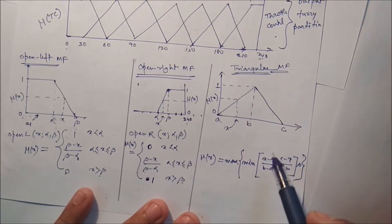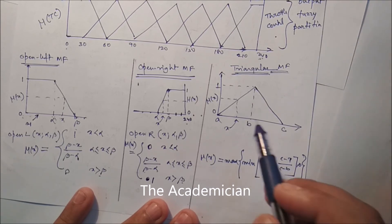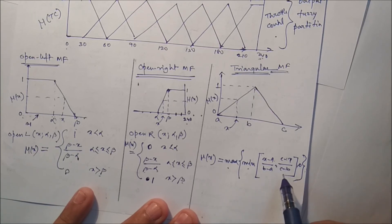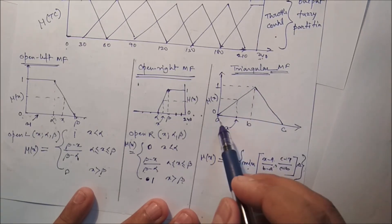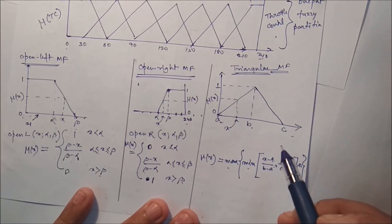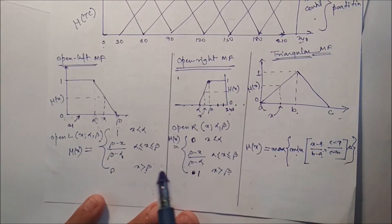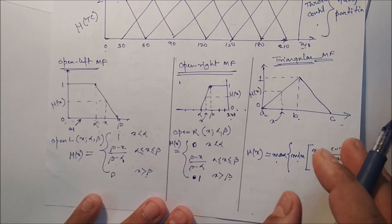For a triangular fuzzy set with parameters a, b, c, the membership value of a crisp value x is: max(min((x − a)/(b − a), (c − x)/(c − b)), 0). The triangular membership function reaches its maximum at b. Using these formulas, we first convert any crisp input value to a fuzzy value through fuzzification, then apply fuzzy inference.